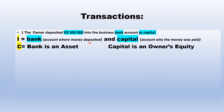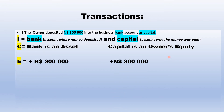Now let's classify the two accounts. Bank is under asset — something that belongs to the business. Capital is owner's equity — it represents the owner's interest in the business. Now let's show the effect: if money is deposited in the bank account, the bank will go up, and also the owner's capital in the business will go up.